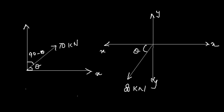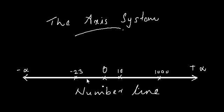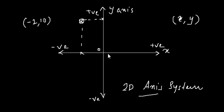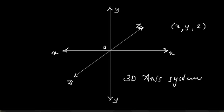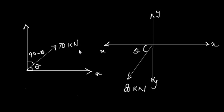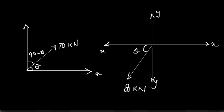To summarize, an axis system comprises number lines with an origin that extends to positive and negative infinity. In a two-dimensional axis system, you need x and y coordinates to define any point. In a three-dimensional axis system, you need x, y, and z coordinates. This is how we are going to use the axis system in the analysis of forces and force vectors, which we will study in the upcoming videos.